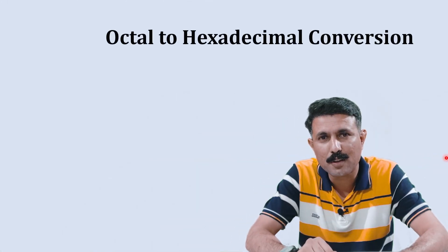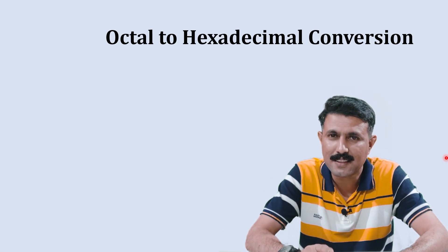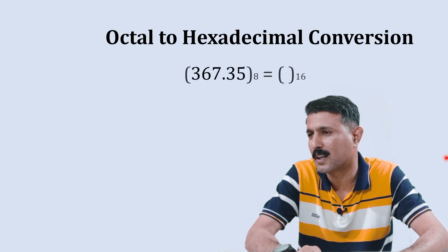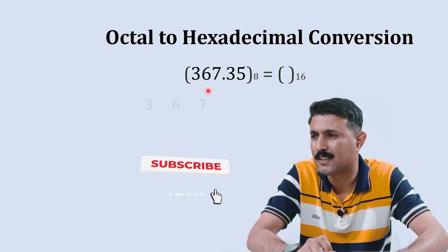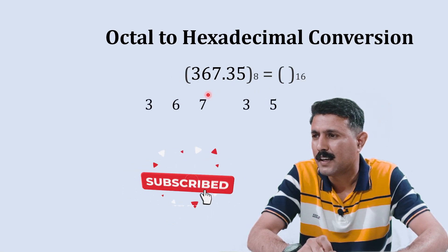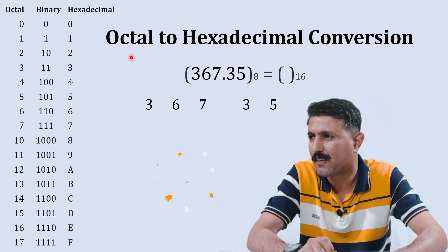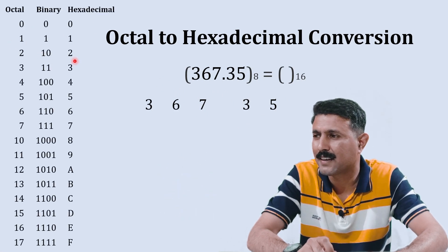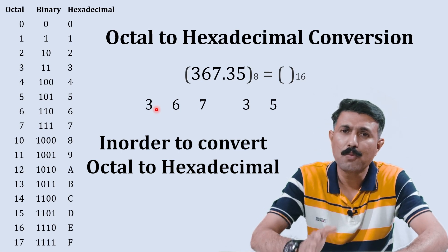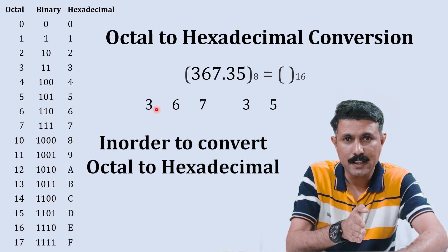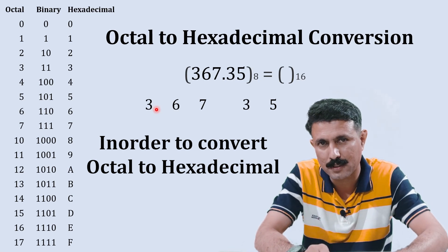First we are going to do octal to hexadecimal conversion, and this is our number which we are going to convert. In order to convert this number from octal to hexadecimal, we'll separate both the integer part and the fractional part, and we'll write our octal, binary, and hexadecimal table.